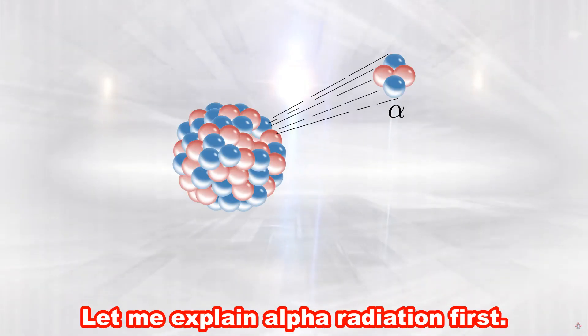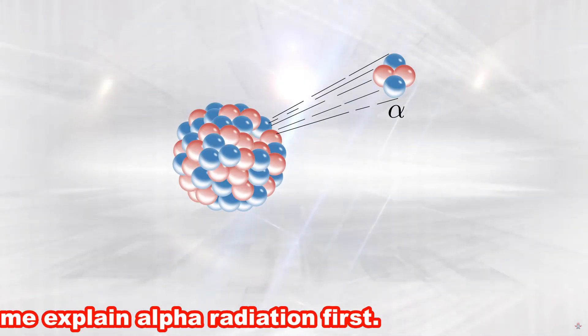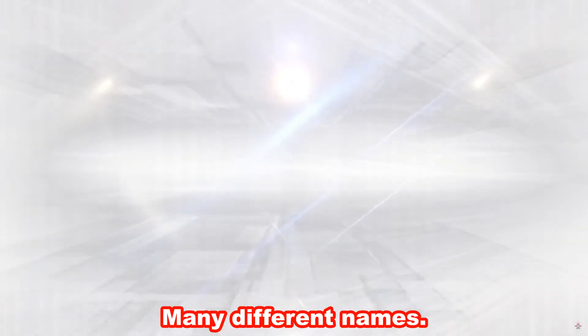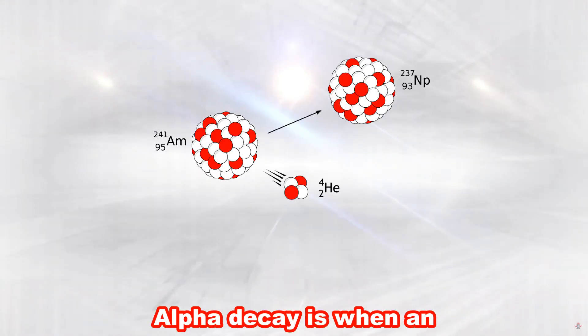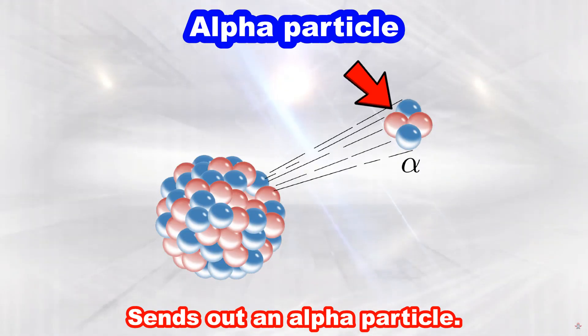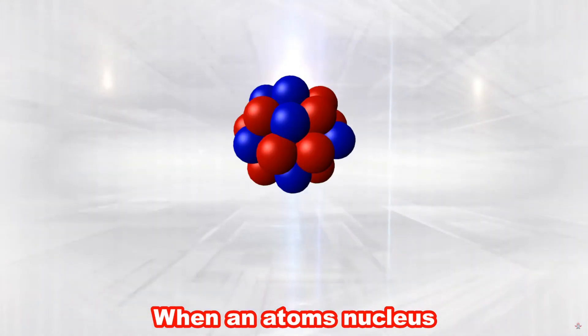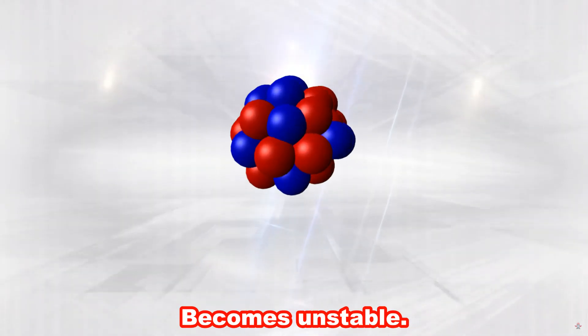Let me explain alpha radiation first. Alpha radiation can have many different names. These are alpha particle, alpha ray and of course alpha radiation. Alpha decay is when an element sends out an alpha particle. Alpha decay occurs when an atom's nucleus becomes unstable.